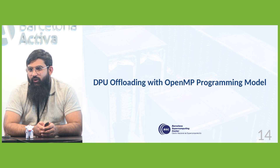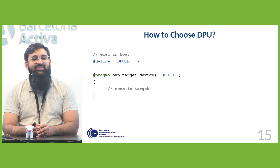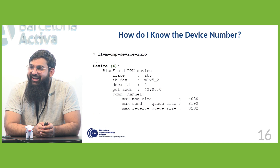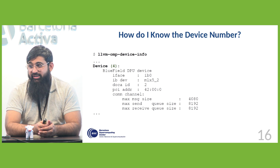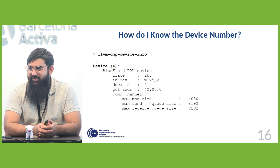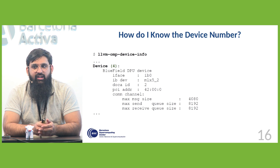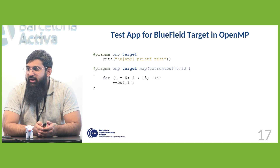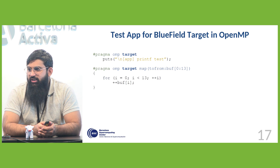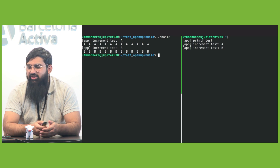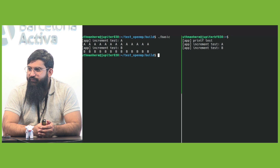How do you use it for DPUs? We did the work for you in the Ordos OpenMP DPU offloading support project. You just have to change the device number and the program will run on the DPU. How do you know the number? Using the same utility — for example, this shows a network card with an interface named IB0, but we can use it as an accelerator because the network card has a bunch of ARM cores inside it.